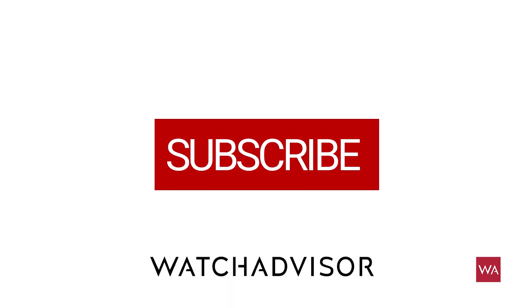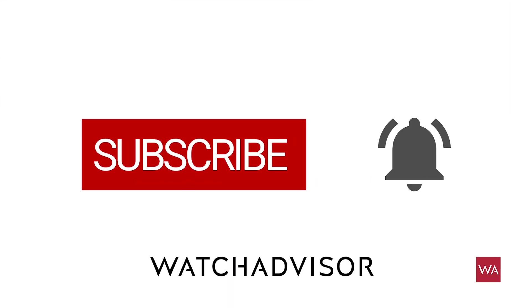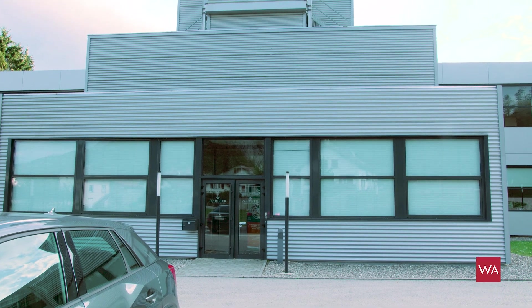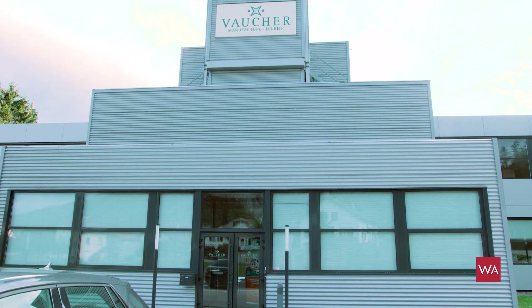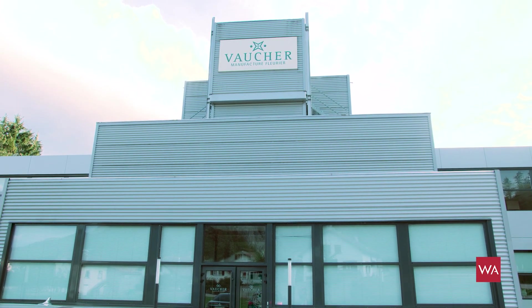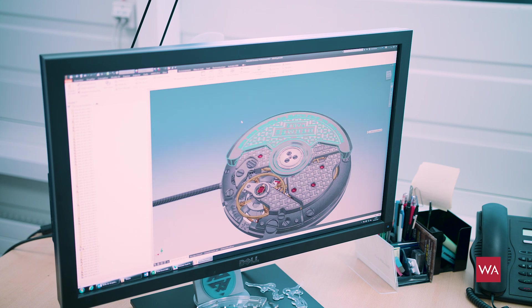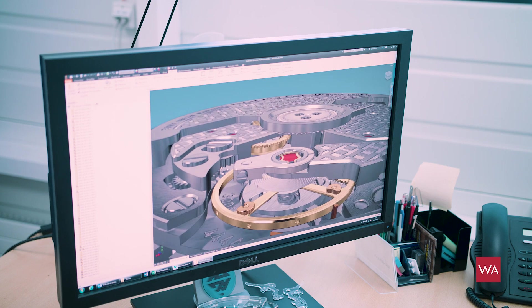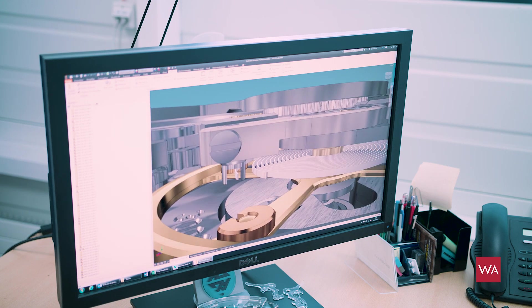Don't forget to subscribe and to hit the bell to get our latest notifications. Our journey starts at the watchmaker manufactory that is located in Fleurier, in the Val de Travers, located in the Swiss Jura. As always, the beginning is in a computer or done by a computer with computer-aided design. This is where the movement basically is designed.